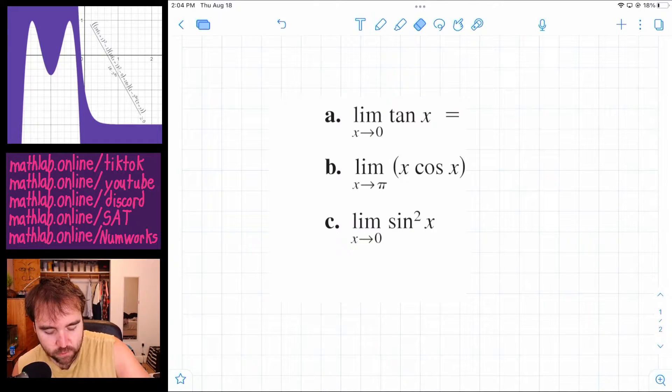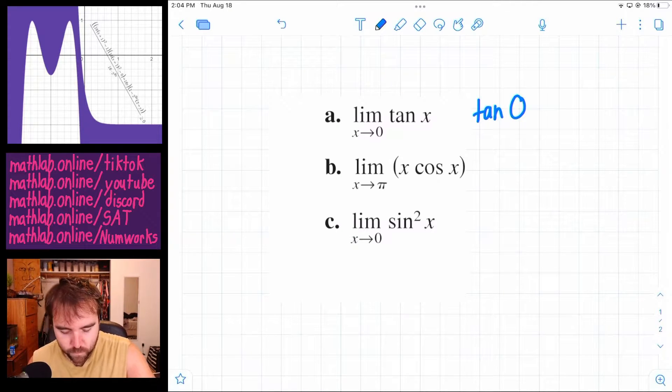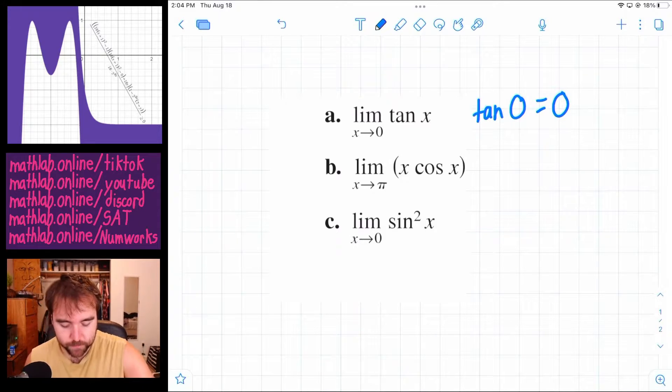So if we did tan of 0, well what's tan of 0? You have to know that, but tan of 0 is 0. So the answer is just 0 because we plugged it in and got a number.